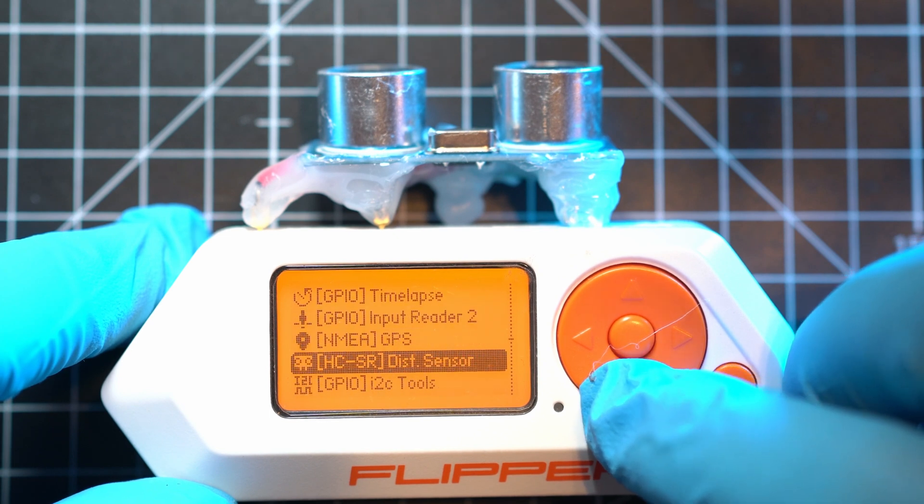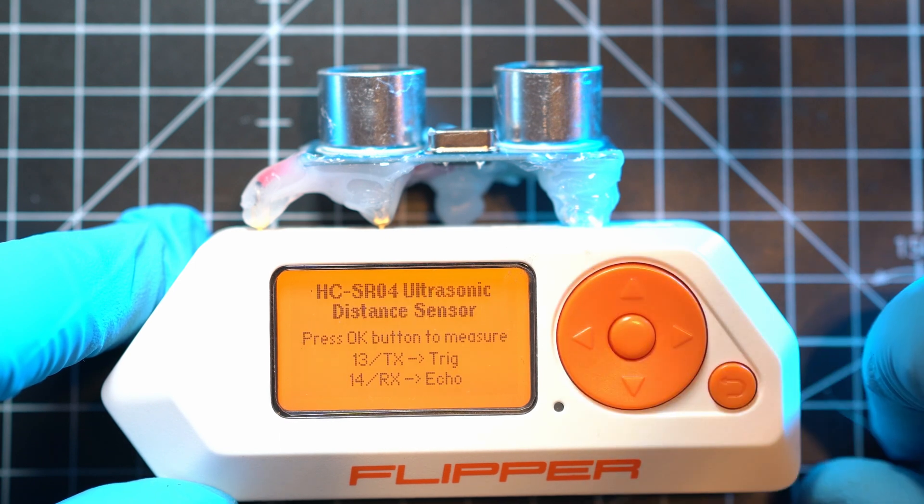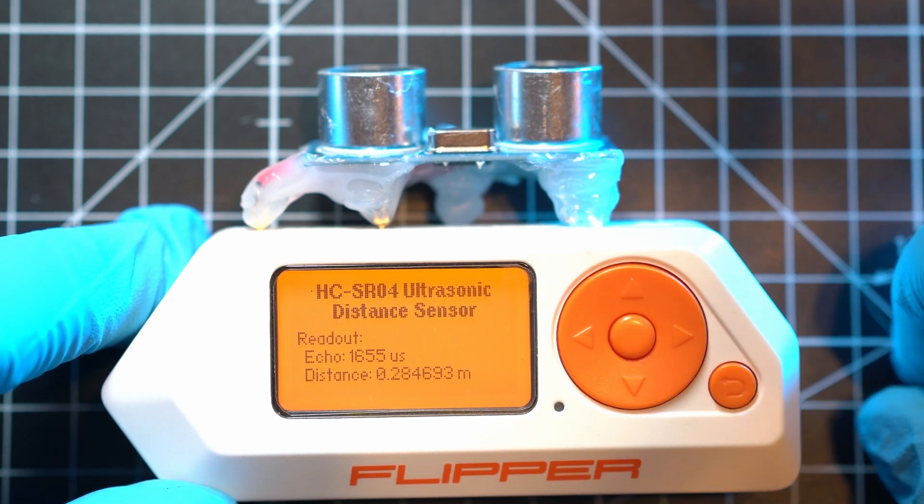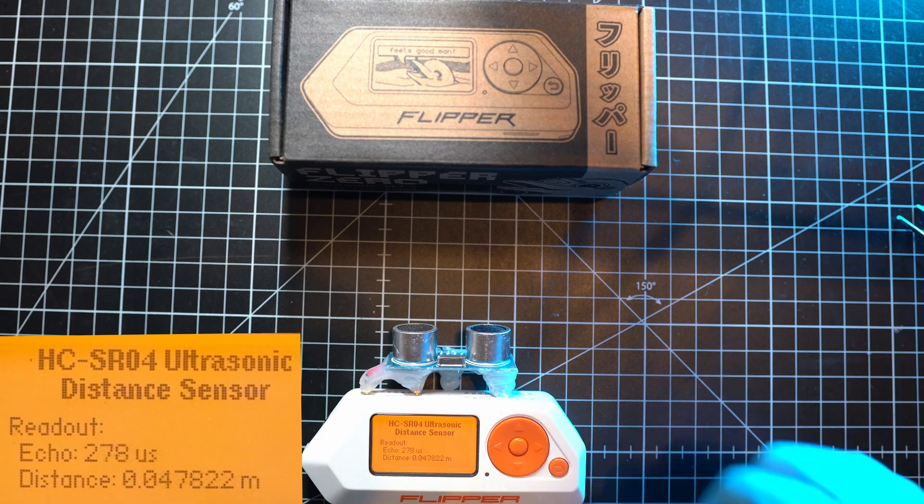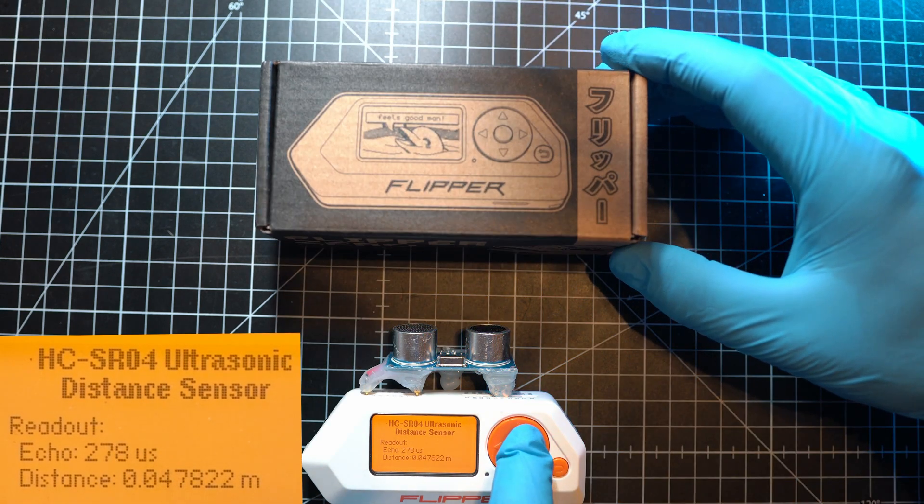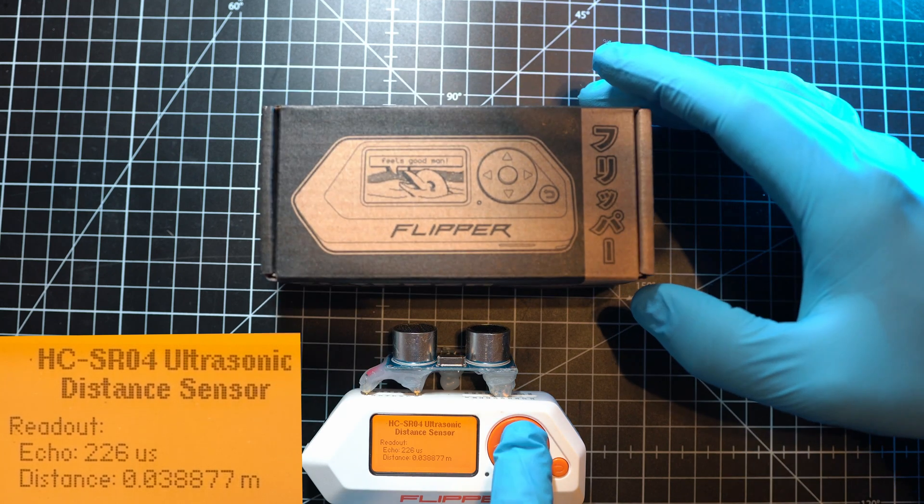Let's do some tests with this external module and see how reliable it is. This mat has these one centimeter squares. So pause the video and count them to see if it's measuring correct distance.